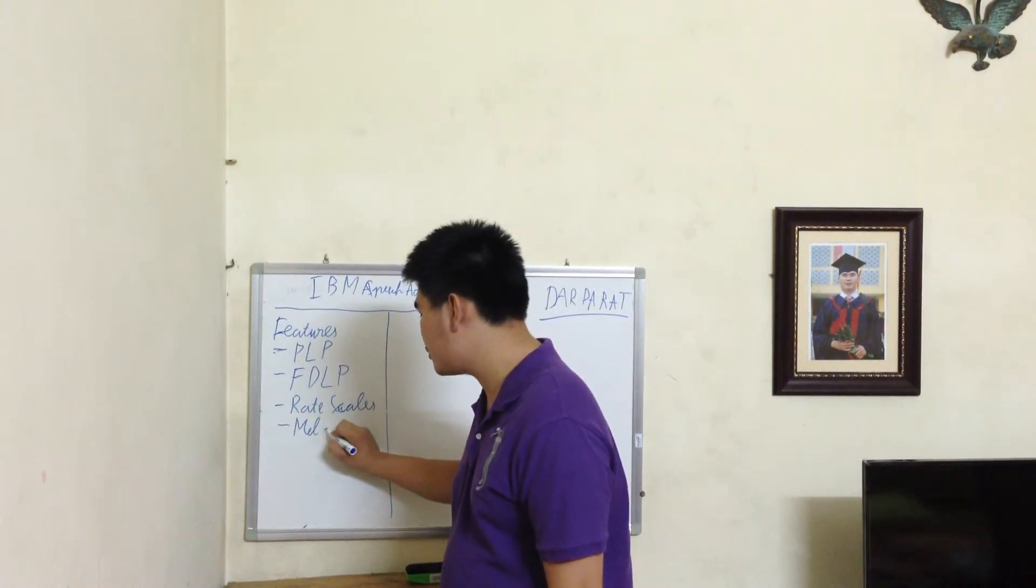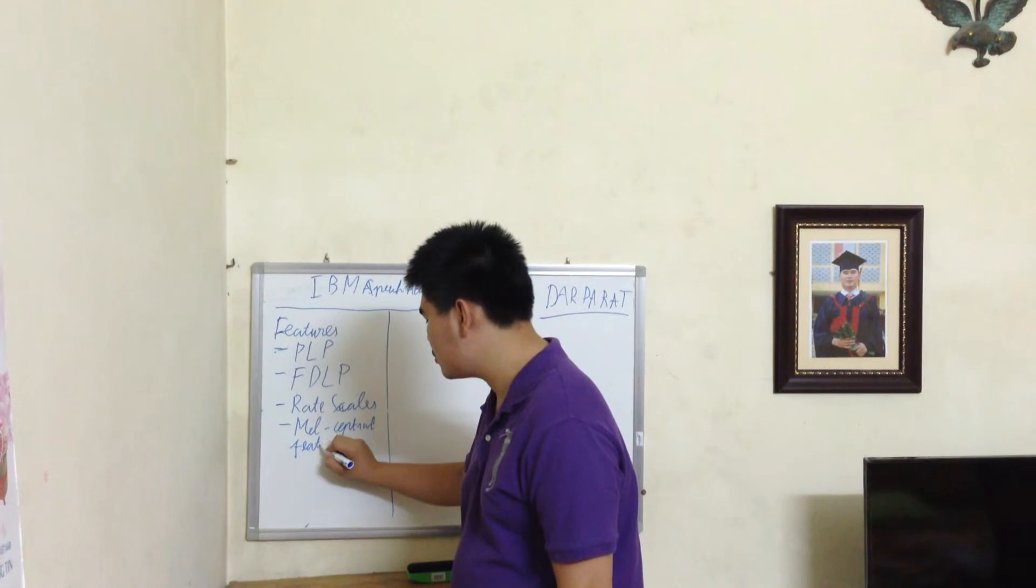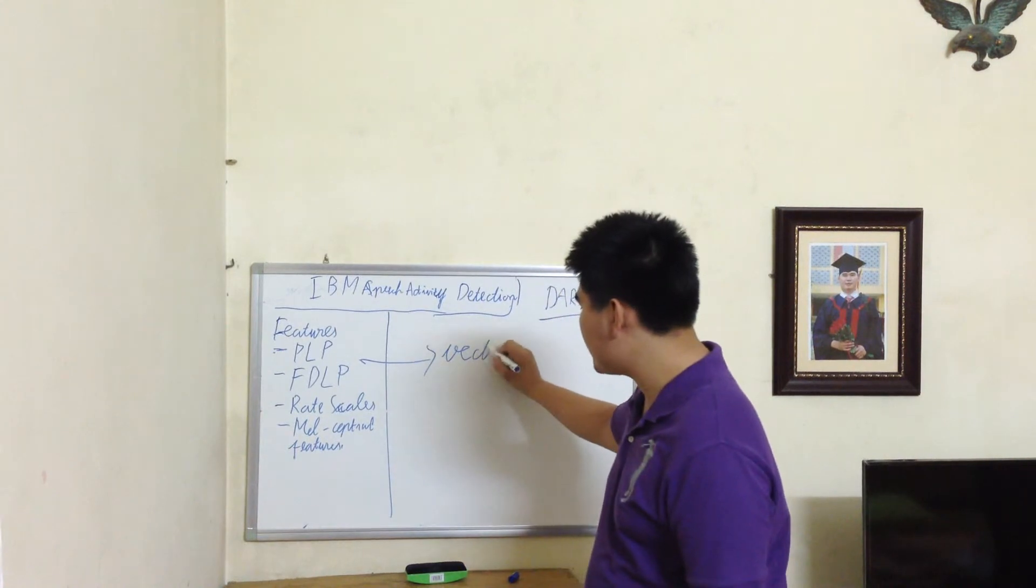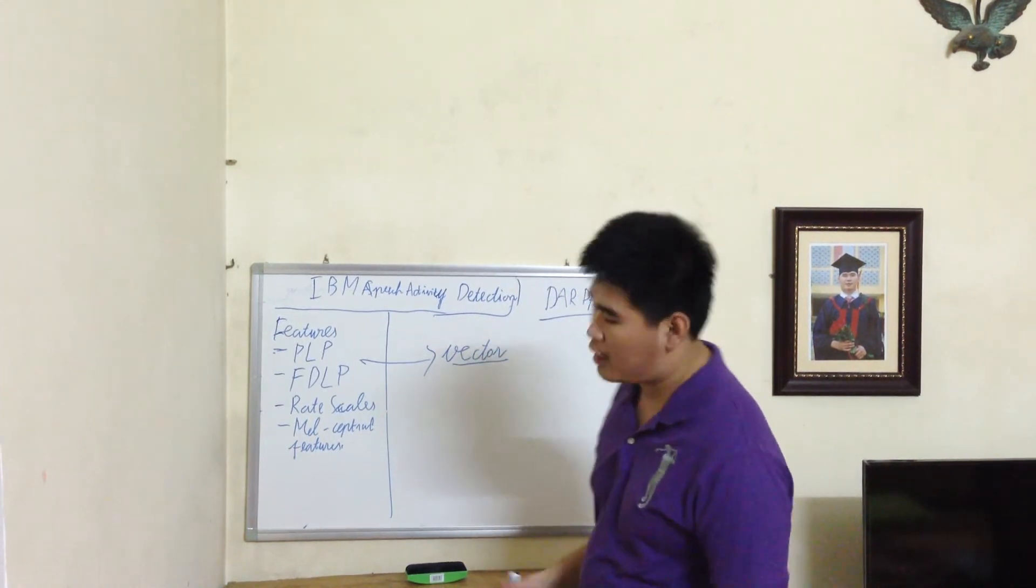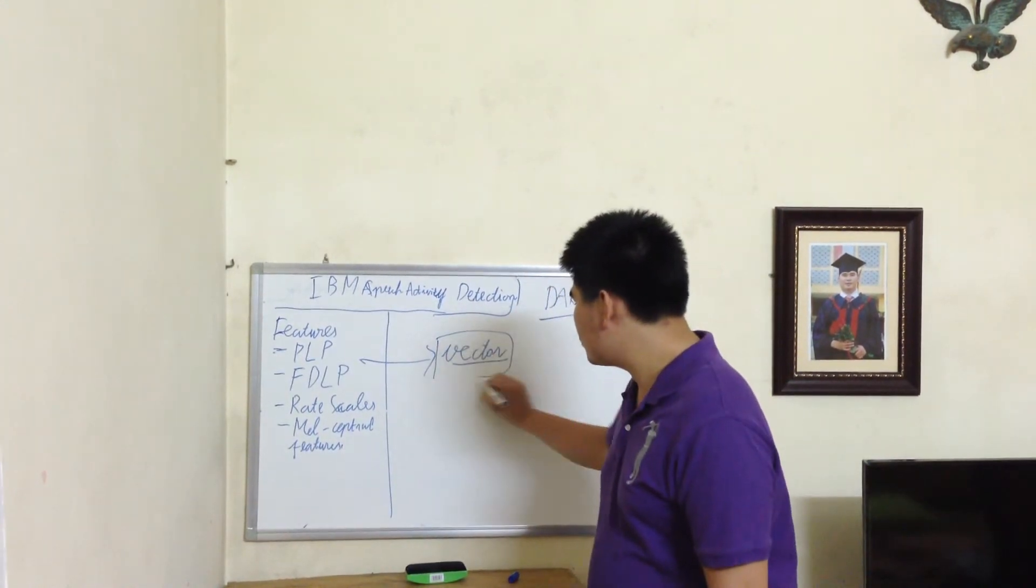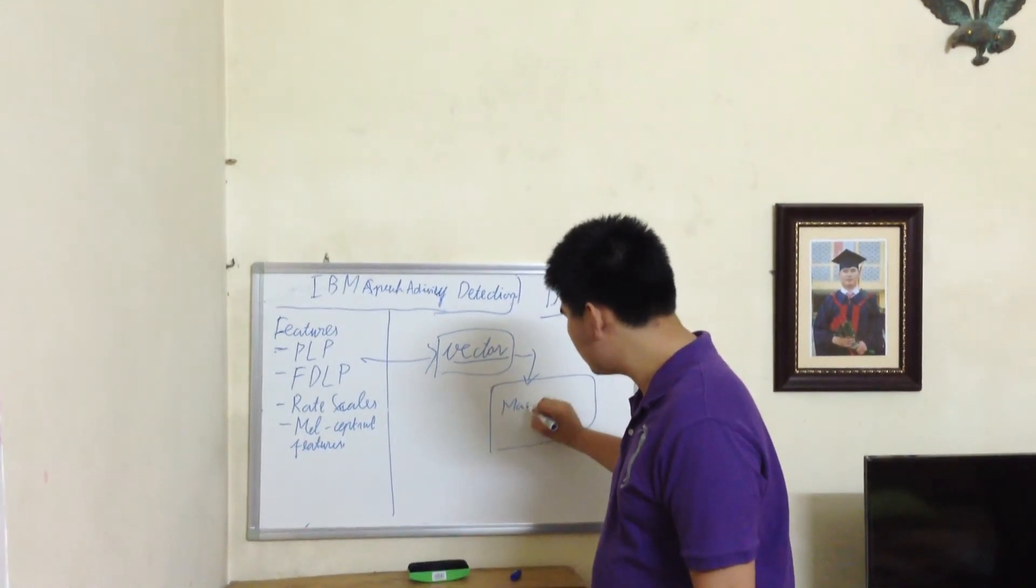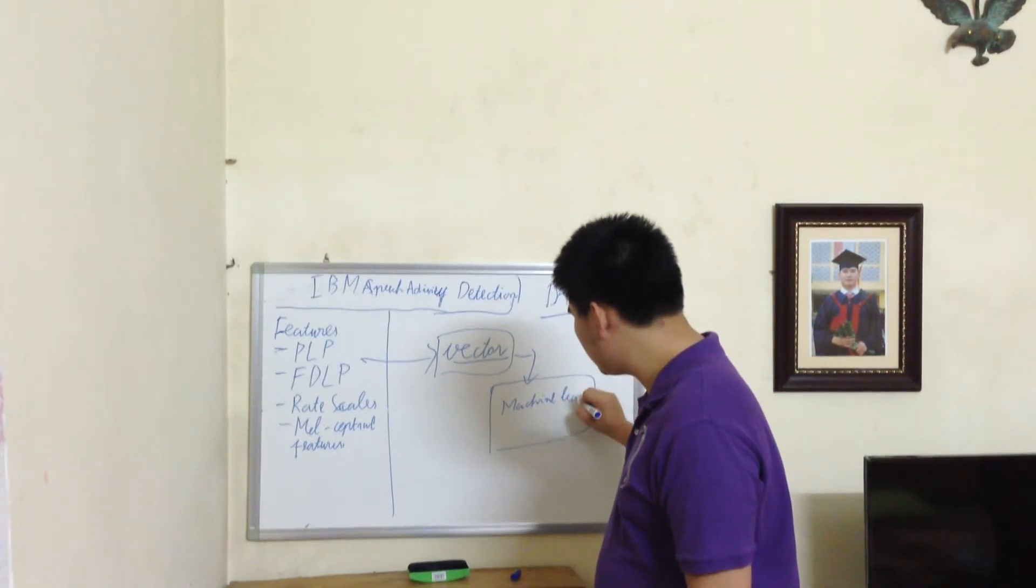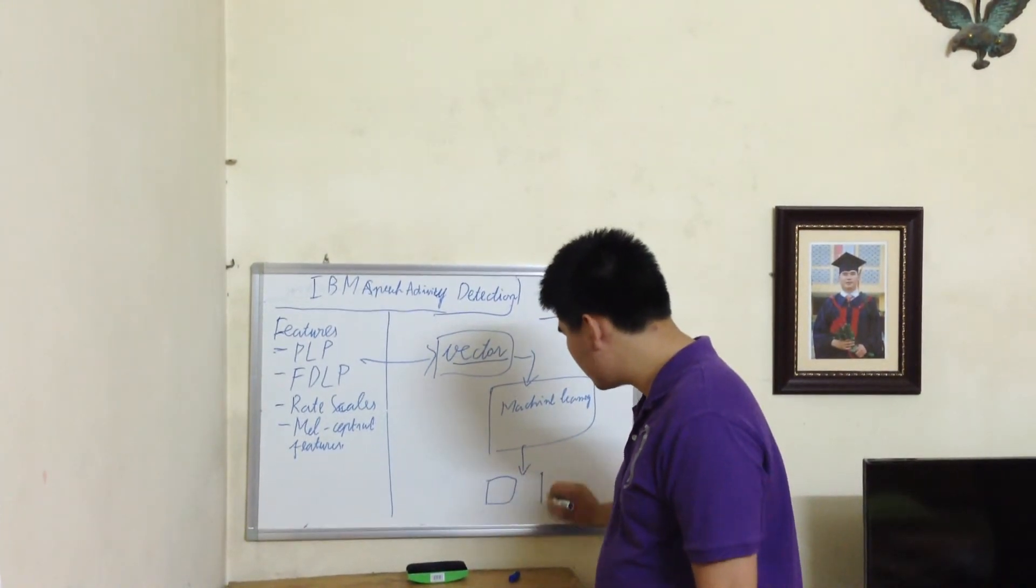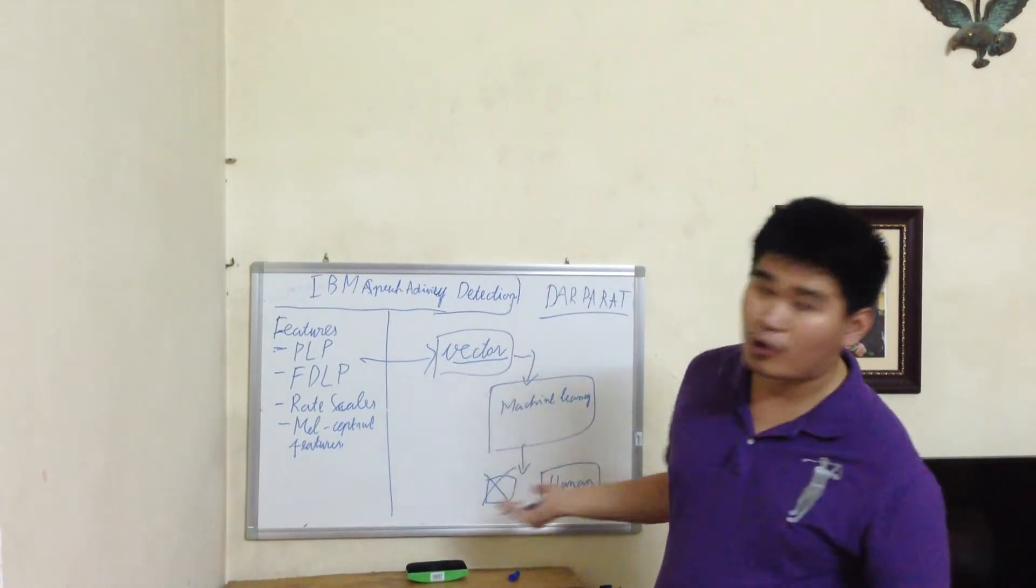And manceptual feature. So I will make, based on that, I will make a feature vector that includes about 400 dimensions to be the input of machine learning. And the output of this step is the classifications: human or not human. That is some overview of my research.